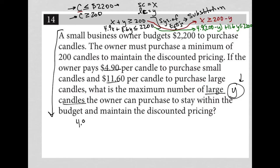I'm going to solve this 4.9, 200 minus Y, plus 11.6Y is less than or equal to 2200. So now I'm just going to multiply things here. So 4.9 times 200 is 980. So 980 minus 4.9Y. So I distribute. Plus 11.6Y is less than or equal to 2200.